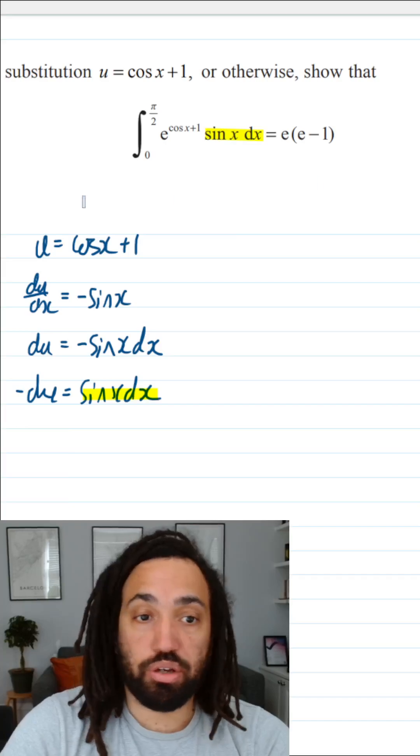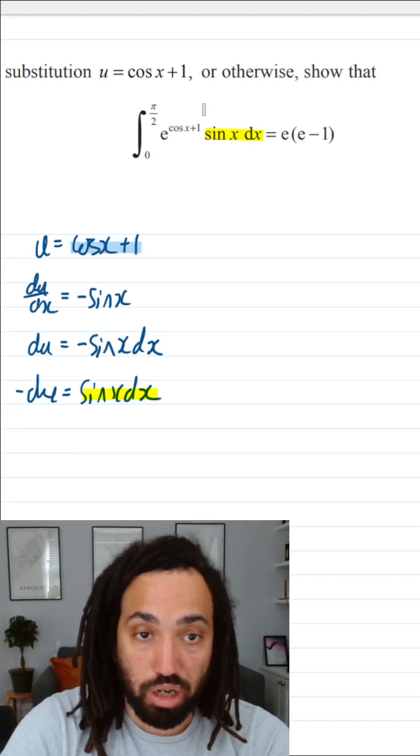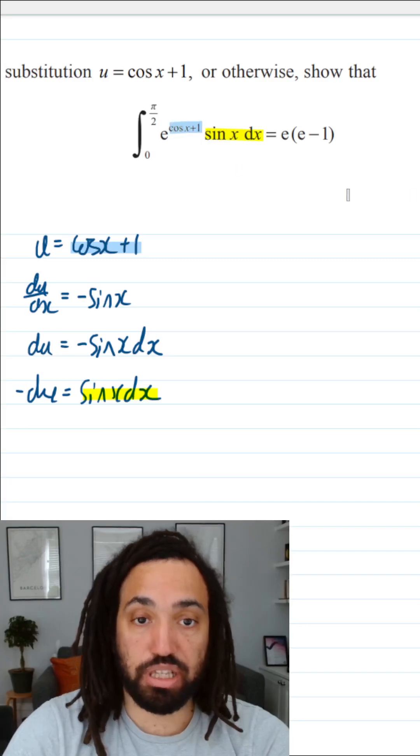And we also know that cos x plus 1 equals u, so that can get swapped out.